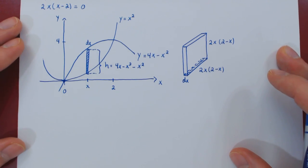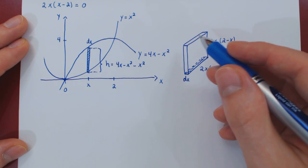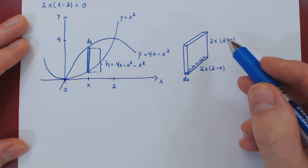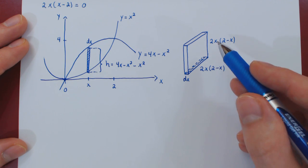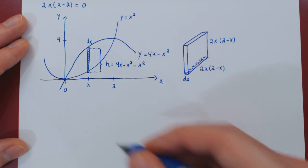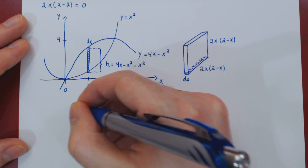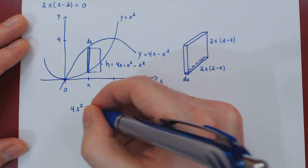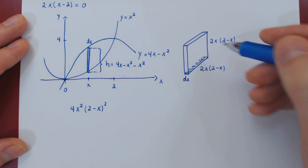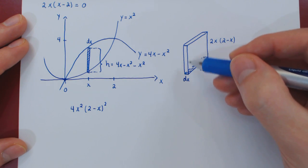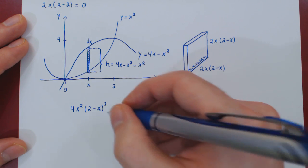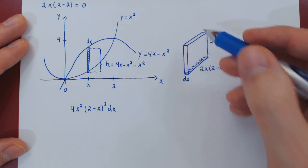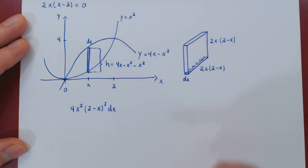And now we're good to go. The volume of this little cross section is the area of the square. So, this times this. So, if you do this times this, you get 4x squared times 2 minus x squared. So, this is the area of the face times the thickness, dx. This returns the volume of this arbitrary infinitesimal cross section of the solid.